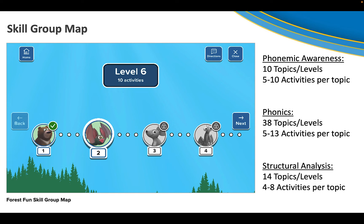If we take a look at this particular student who's in forest fun, there is one activity that has been completed. The student then can move into the second activity. There are 10 activities in this level, but only the first two have been unlocked. The student must complete activities in order.